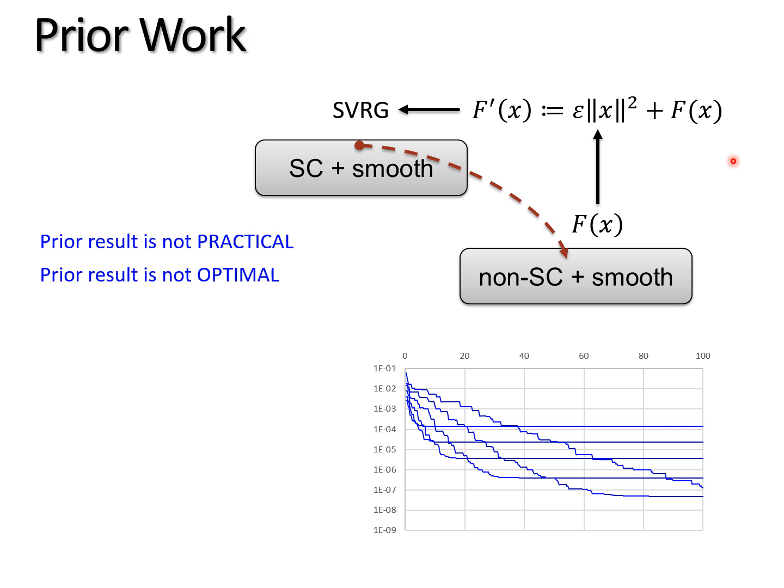And two, such reductions are not optimal. Meaning that if you use this reduction, the fastest convergence rate for stochastic methods you can get is only log(t) over t squared.